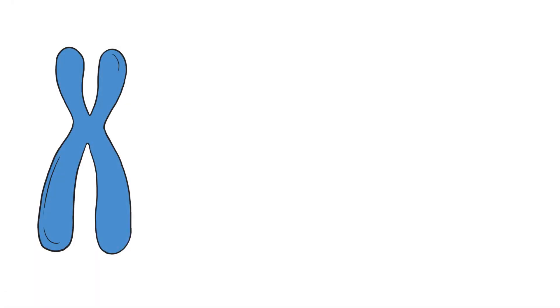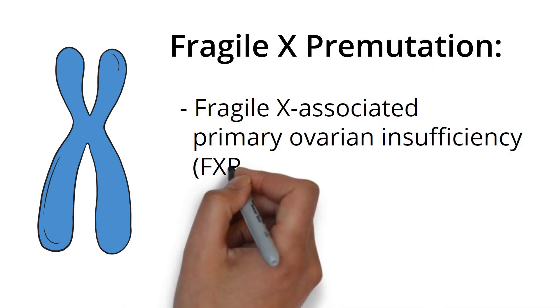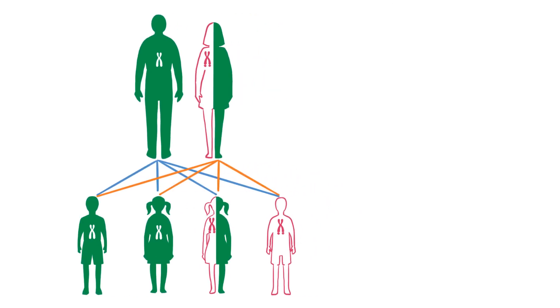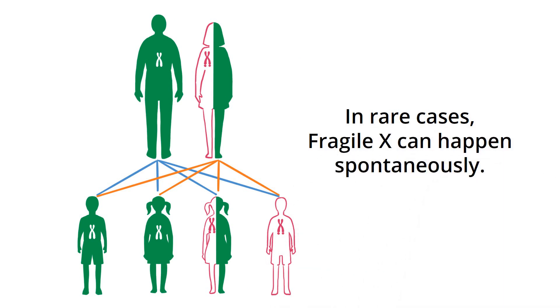A pre-mutation also has health risks, including conditions like FXPOI and FXTAS in some, but not all, individuals. Fragile X is hereditary, which means it's passed from parents to their children. In rare cases, Fragile X can happen spontaneously.